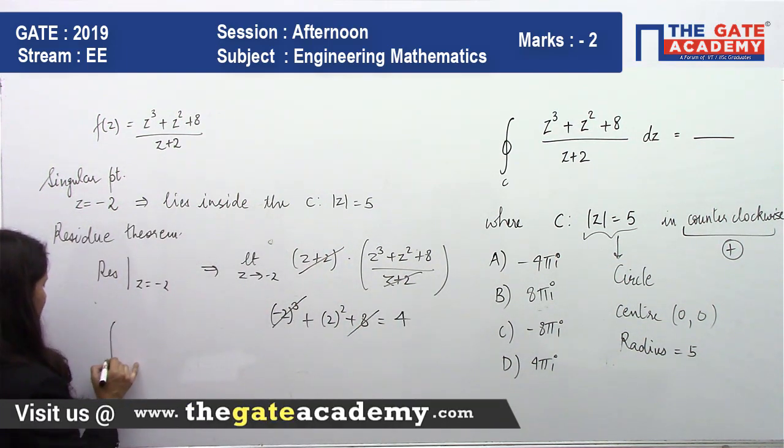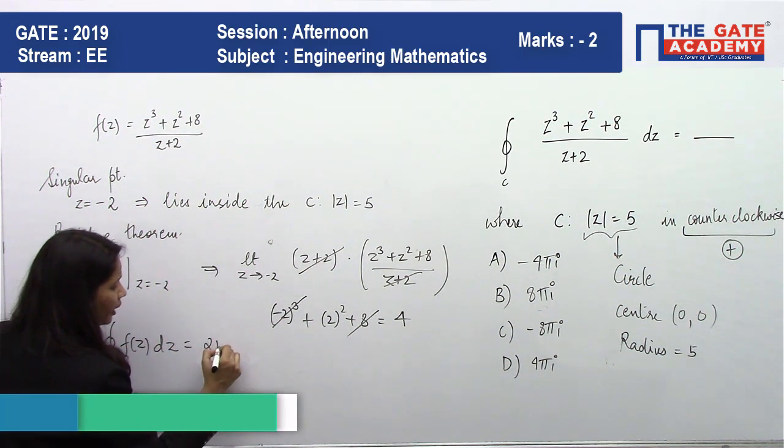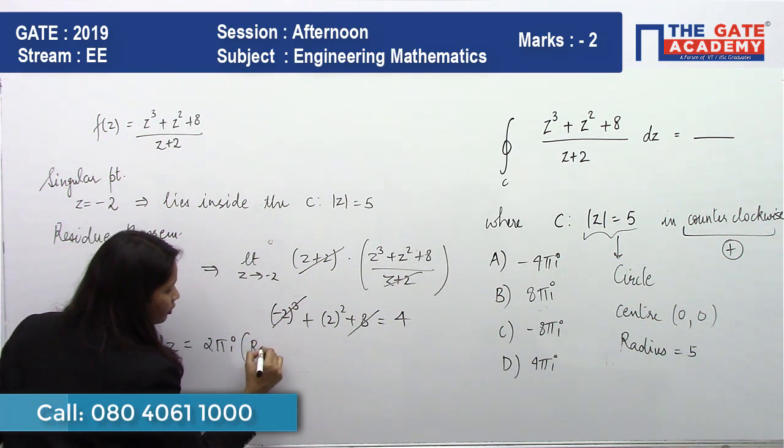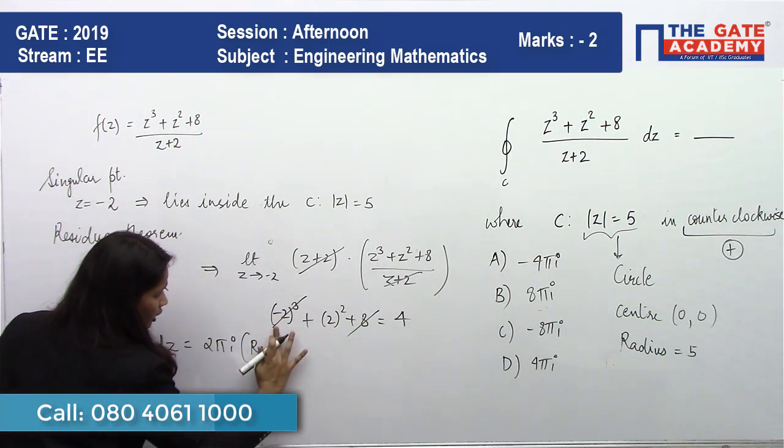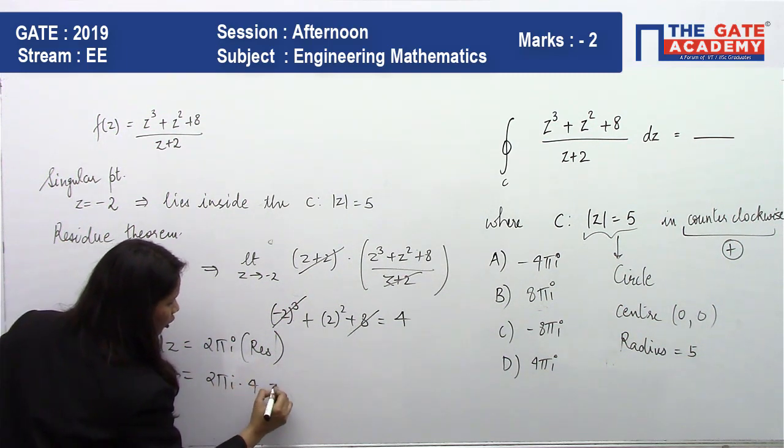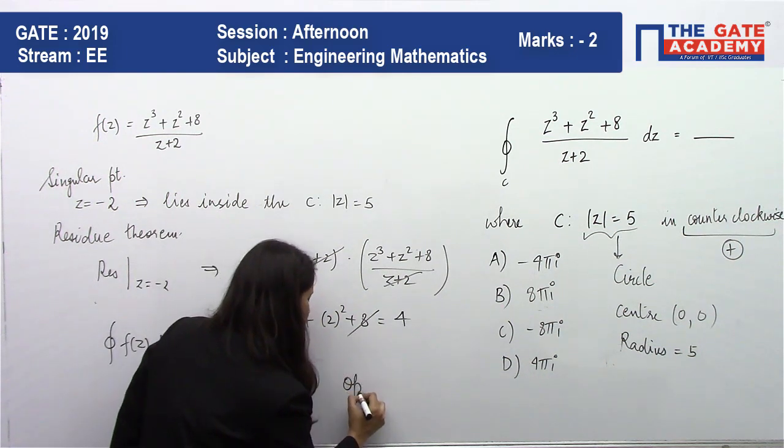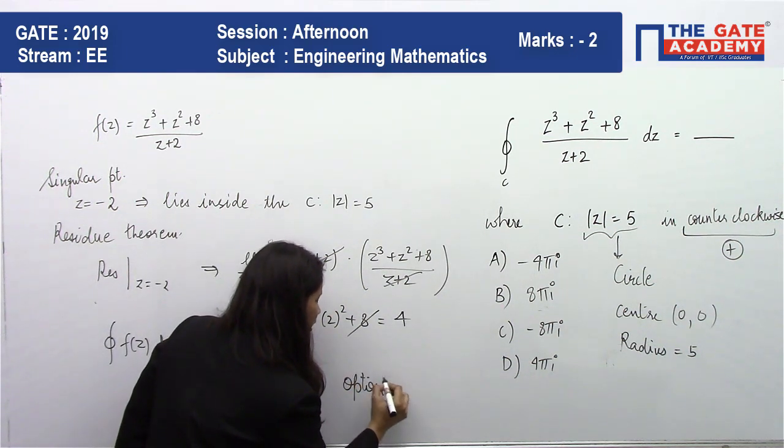And now using residue theorem, the integration of f(z)dz is given by 2πi into the residue. That is 2πi into 4, or 8πi, which is given in option number B. So option D is the right answer to this question.